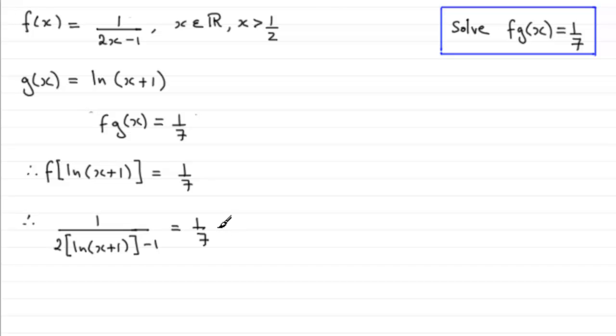Now, if I multiply both sides of the equation by 7 and 2 times the natural log of x plus 1 minus 1, what we get is that 7 equals 2 times the natural log of x plus 1, and then minus 1.